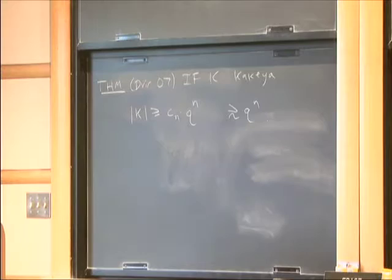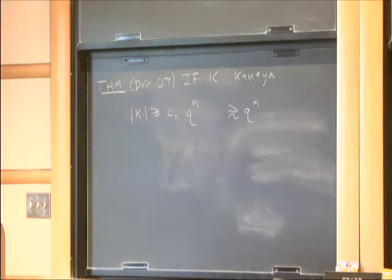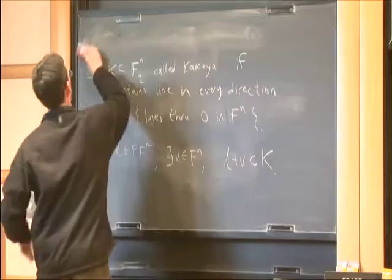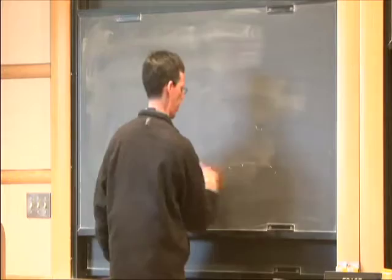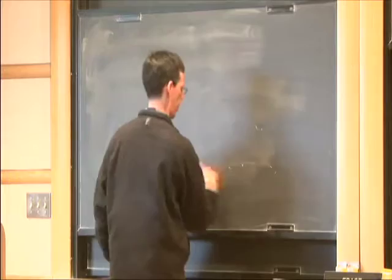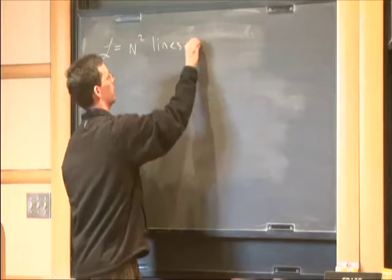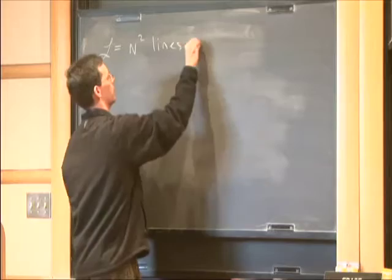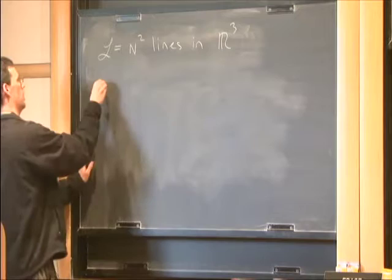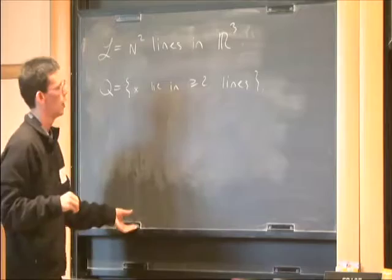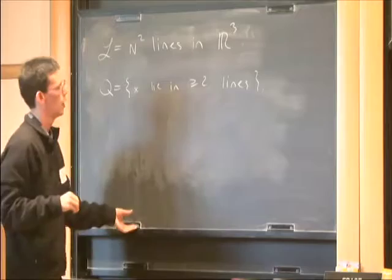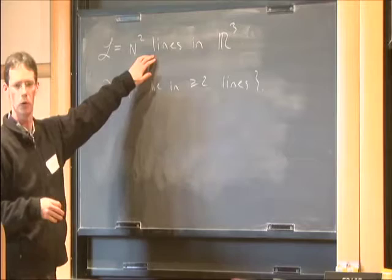I want to go on and discuss the next example where the polynomial method has been useful, which is studying the incidences of lines in three-dimensional space. Suppose L is a set of N² lines in three-dimensional space. I'm interested in the points where they intersect. Let Q be the set of x that lie in at least two lines. A very basic question is: how big can the set Q be in terms of N? Any two lines intersect in at most one point, so Q can be as big as N² choose 2.